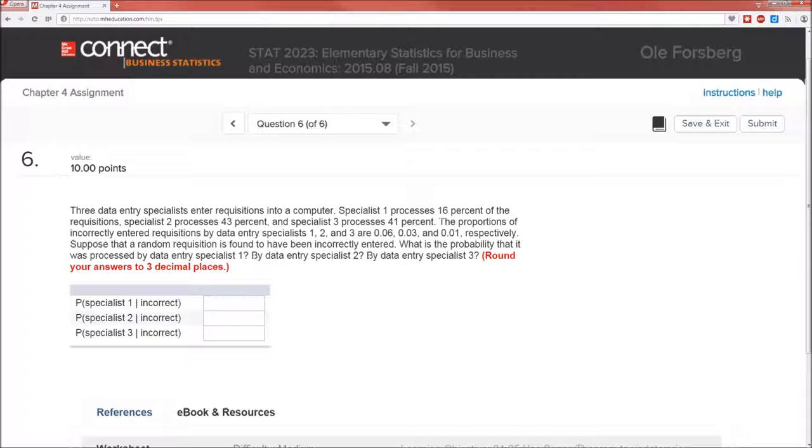Notice those three probabilities that I just stated are not these three probabilities. The 0.06 is the probability incorrect given specialist 1. What my cursor is pointing at is the probability specialist 1 given it's incorrect. Those are not the same probabilities.